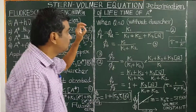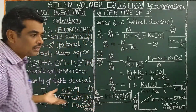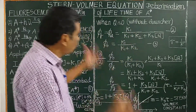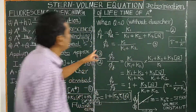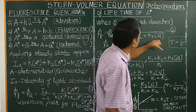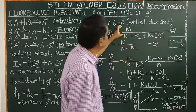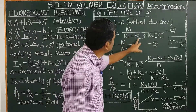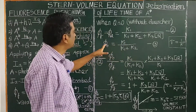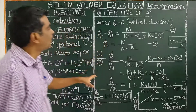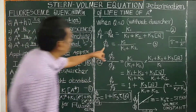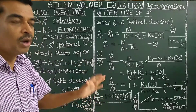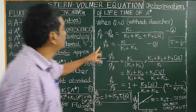When there is no quencher — when Q equals zero, in the absence of quencher — equation 2 is reduced to K1 divided by (K1 + K2). This is nothing but the quantum yield of fluorescence only in the absence of quencher, φ_0.